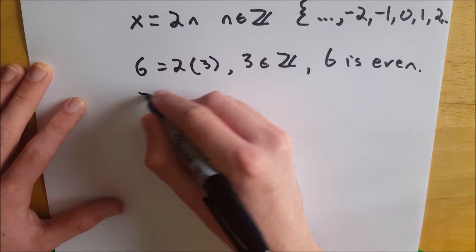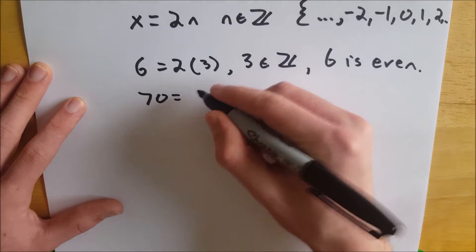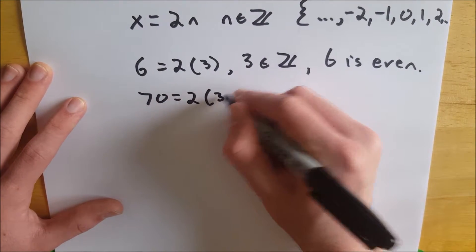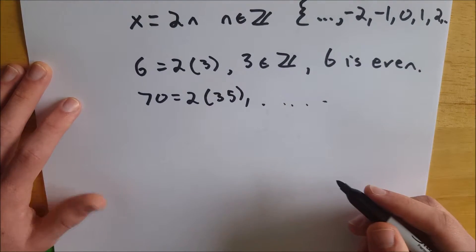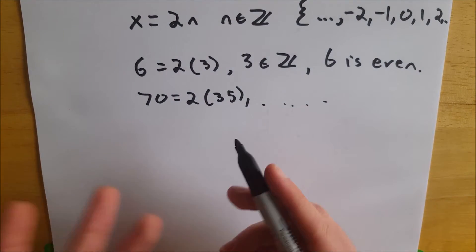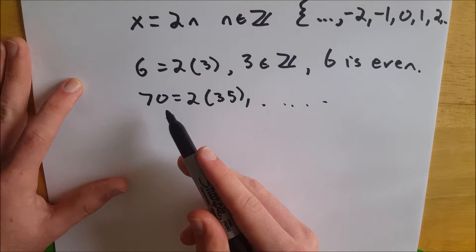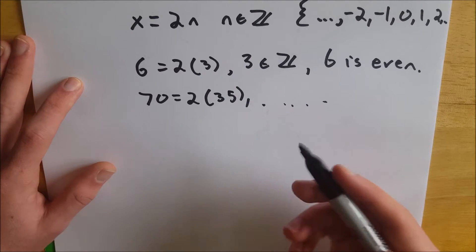Same thing if we wanted to prove that 70 is even—just notice that 70 equals 2 times 35. 35 is an integer, so on and so forth. And you can do this, of course, with variables as well, even if you don't have actual numbers.